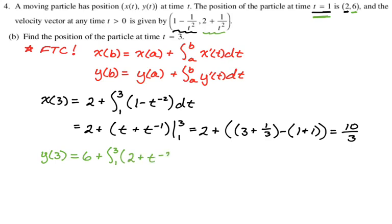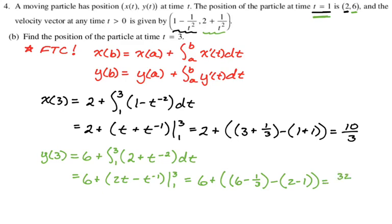We've got to integrate this. Again, I'm going to use negative exponents. So 6 plus 2t minus t to the negative 1st. That's plus 1 times the reciprocal. Then we're going from 1 to 3. So 6 plus quantity, plug in 3, and you will get 6 minus 1 3rd. Minus, plug in 1, you get 2 minus 1, which is just 1. So 6 plus 6 is 12. Minus 2 is 10. Plus 1 is 11. 11 minus 1 3rd is 32 3rds.